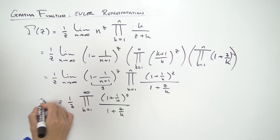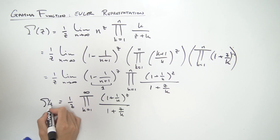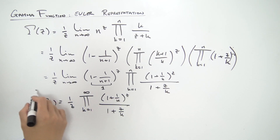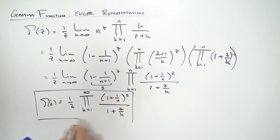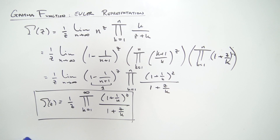And this is exactly the Euler representation for the gamma function. Let's box that — we are done. This basically ends my three-part series on product representations of the gamma function. Hope you guys enjoyed these videos. Until next time, have a wonderful day!